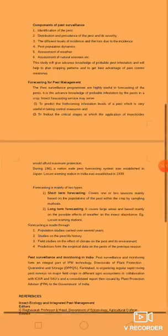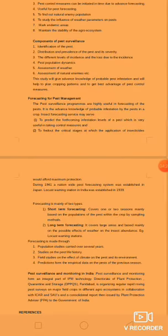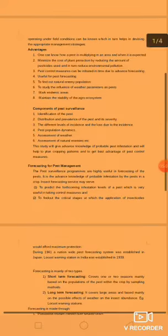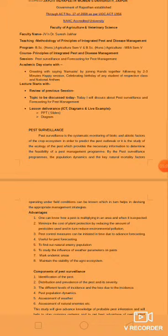Regarding pest surveillance and monitoring in India: pest surveillance and monitoring form an integral part of IPM technology directed at plant protection, quarantine, and storage. The agency working in India is located at Faridabad. It organizes regular rapid roving pest surveys on major field crops in different agro-ecosystems, in collaboration with ICAR and state agriculture universities, and advisory reports are issued by Plant Protection Advisory to the government of India.